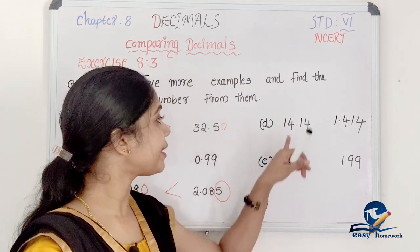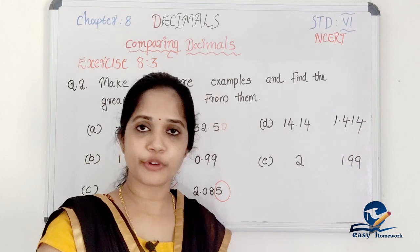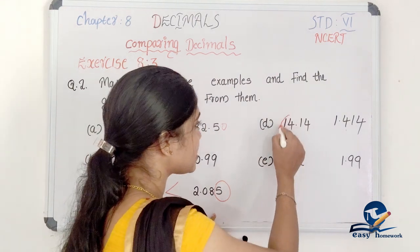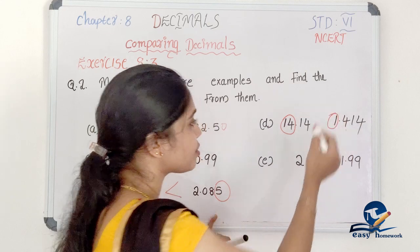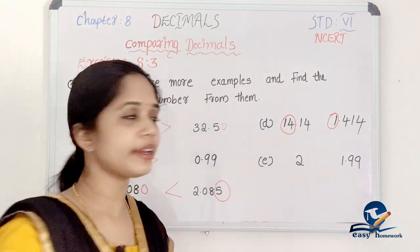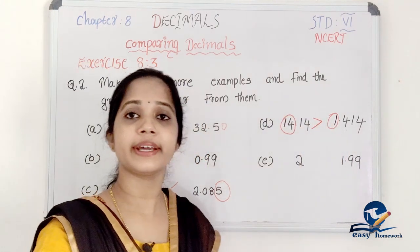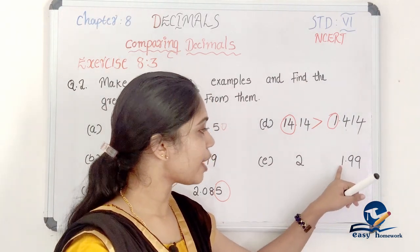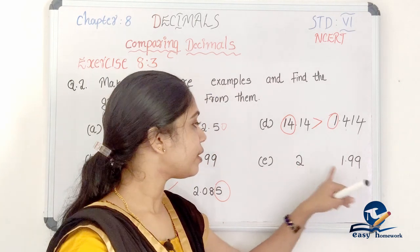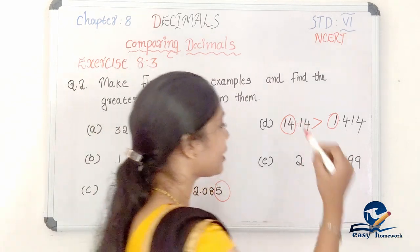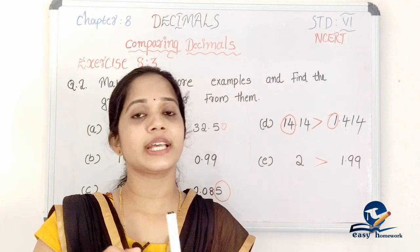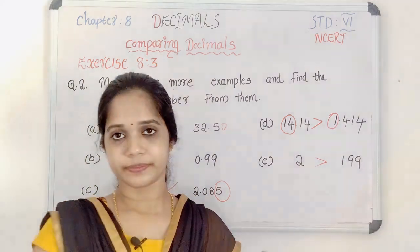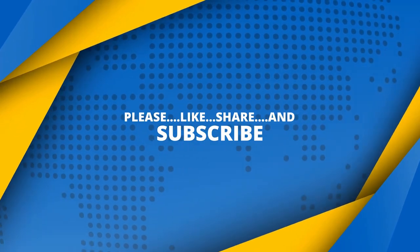Next, compare 14.14 and 1.414. Left side: 14 and 1 — 14 is greater, so 14.14 is greater. Next, compare 2 and 1.99. Left side: 2 and 1 — 2 is greater. So we have learned about comparing decimal numbers in this class. If you have any questions, please comment. Thank you.